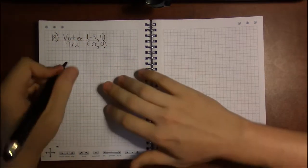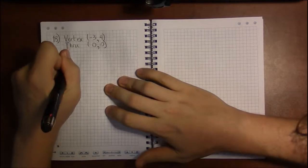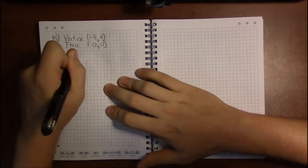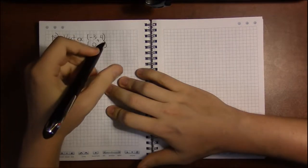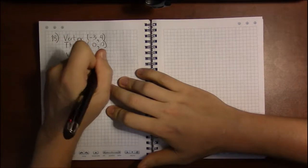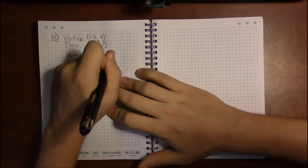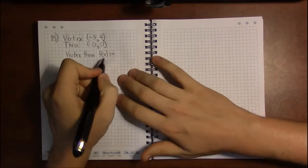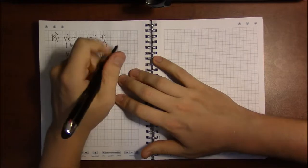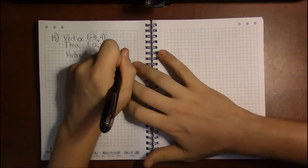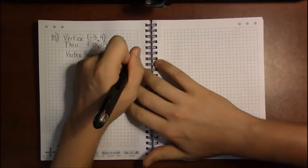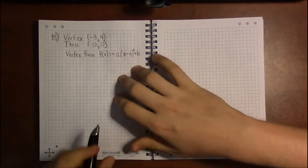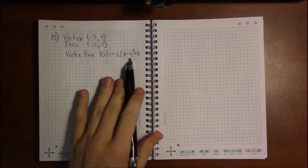So we start with the vertex form of a quadratic, and that's simply that y or f(x) is a times the quantity (x - h) squared plus k.